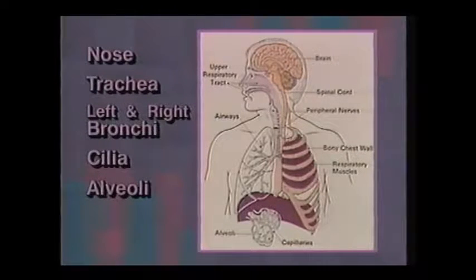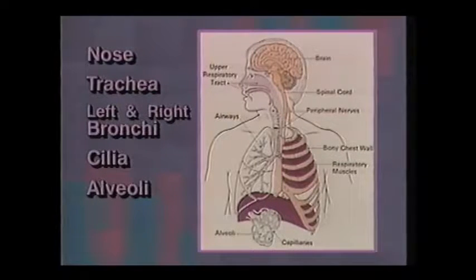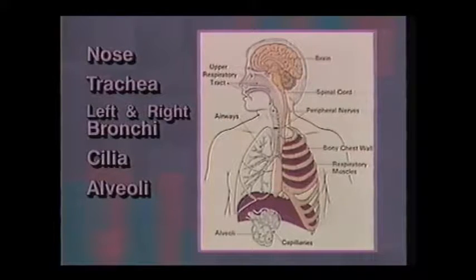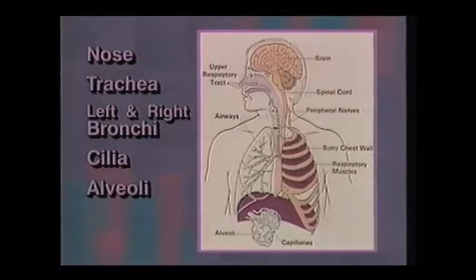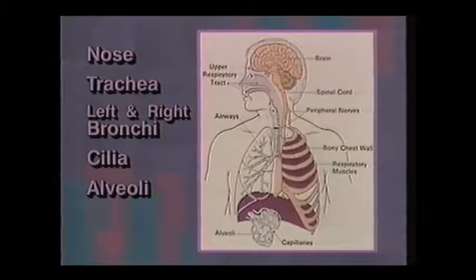The alveoli are laced with beds of fine blood vessels called capillaries. At the surface of the alveoli, oxygen and carbon dioxide are exchanged. The oxygen is carried to the heart, then circulated throughout the entire body. Carbon dioxide is exhaled through the lungs.